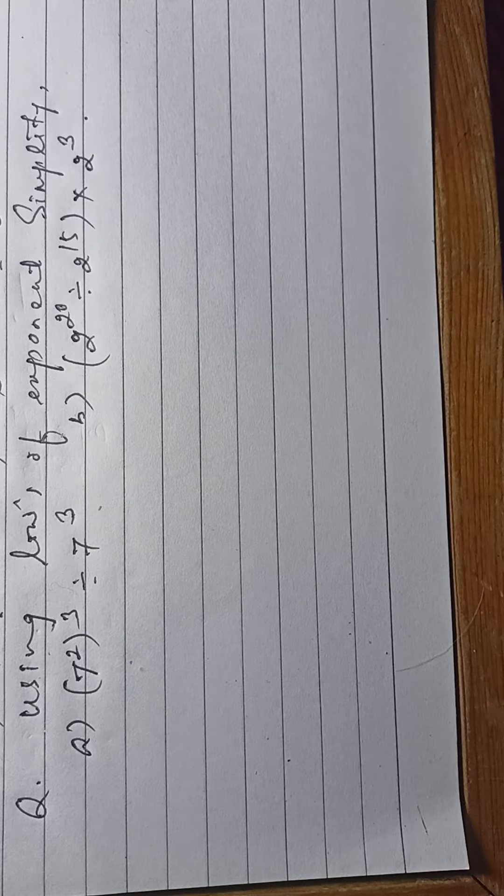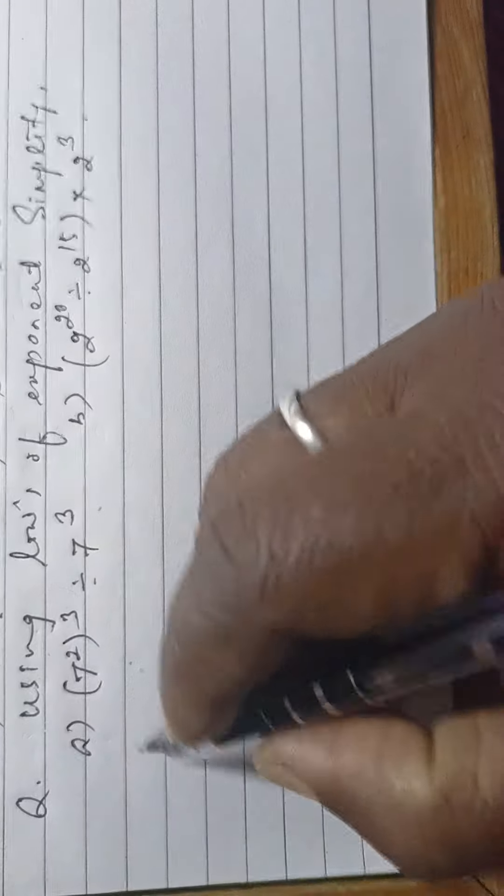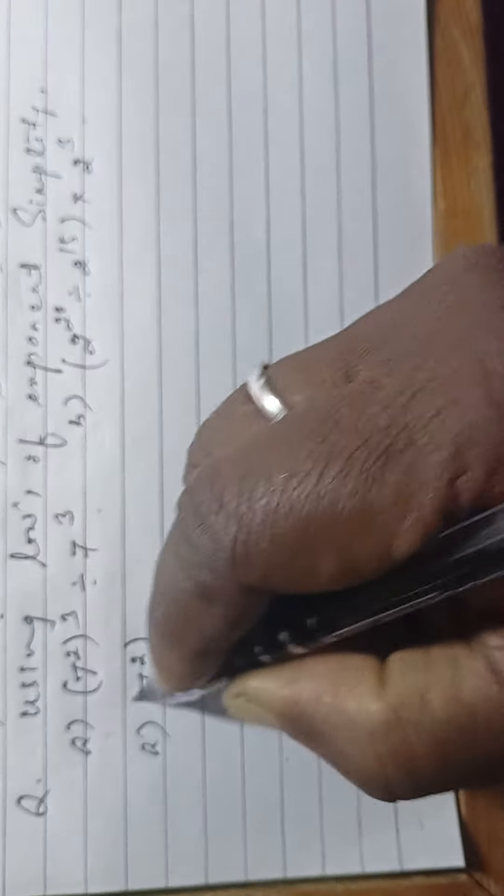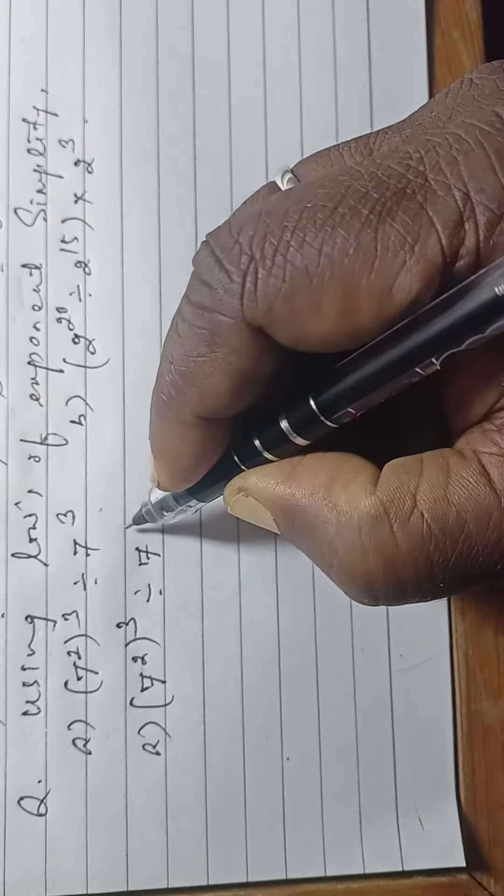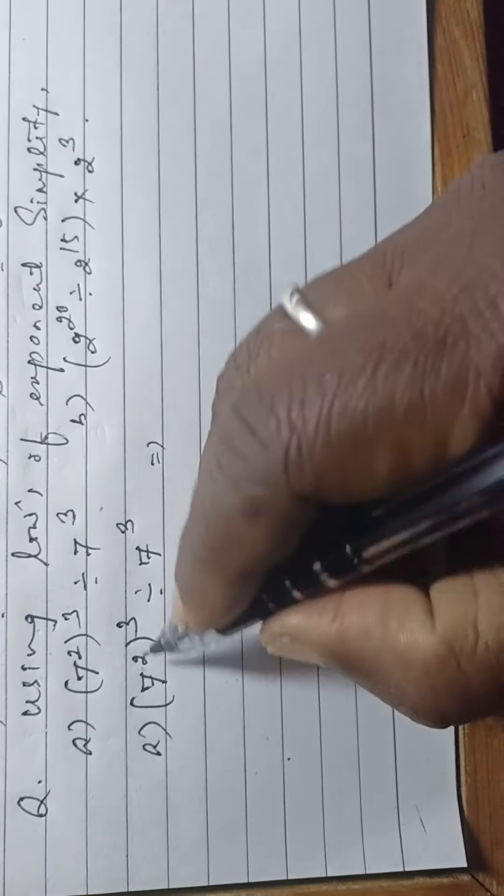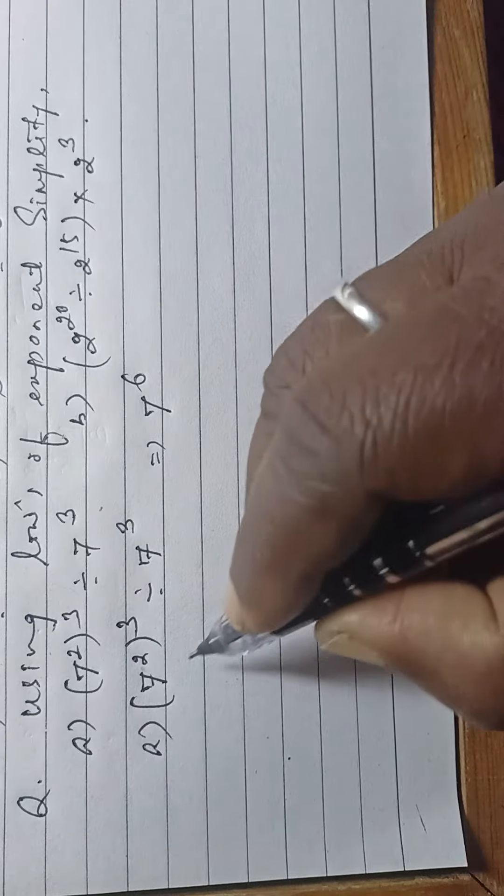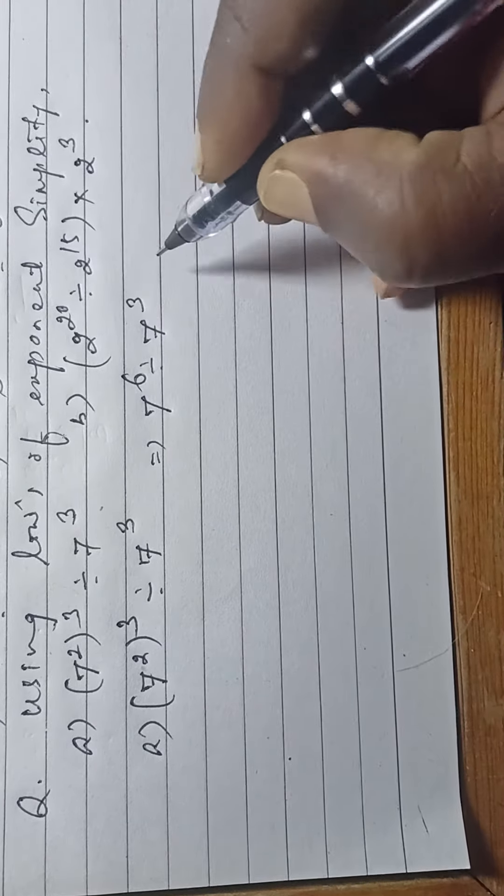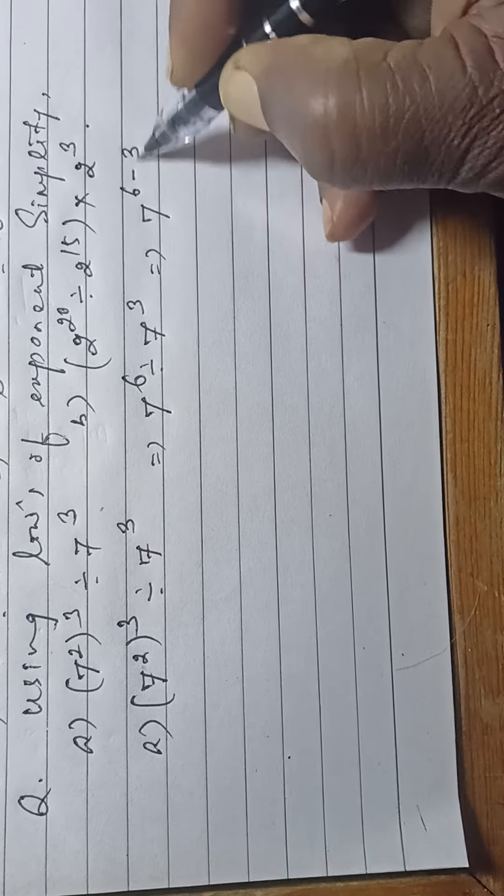Using laws of exponents, simplify (a): 7 squared, whole cube, divided by 7 to the power 3. This becomes 7 to the power 6 divided by 7 to the power 3, which equals 7 to the power 6 minus 3.